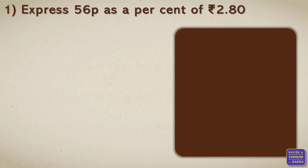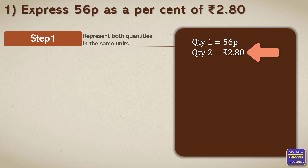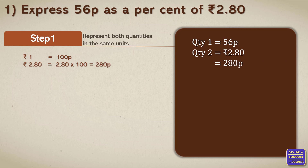Moving on to the first sum: express 56 paise as a percent of 2 rupees and 80 paise. The very first step — we need to represent both quantities in the same units. The first quantity is 56 paise and the second quantity is 2 rupees and 80 paise. We need to convert the second quantity to paise. One rupee is equal to 100 paise, so 2 rupees 80 paise converts to 280 paise.